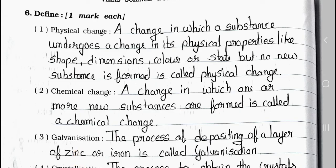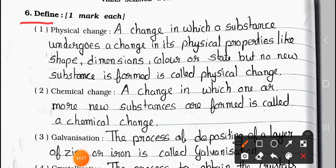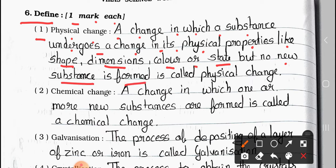Now see main 6: Define the following, one mark each. Number 1: Physical change. Answer: A change in which a substance undergoes a change in its physical properties like shape, dimensions, colour or state, but no new substance is formed, is called a physical change.